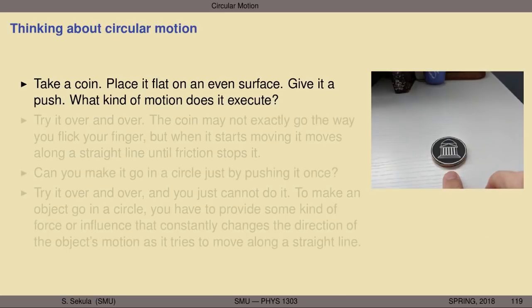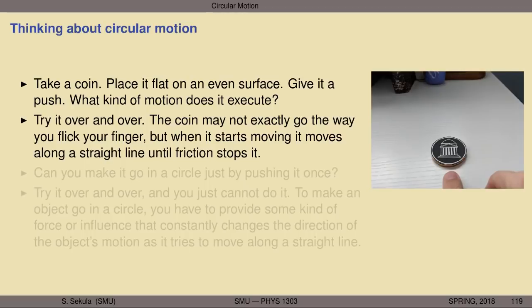Let's think about circular motion and how you can make it happen. Take a coin — I've depicted a ridiculously large coin in the picture on the right. Put it flat on a nice level, even surface and give it a push. What kind of motion does it execute? Try it over and over. The coin may not go exactly the way you flick your finger — it may veer left or right — but when it starts moving, it moves along a straight line until friction stops it.